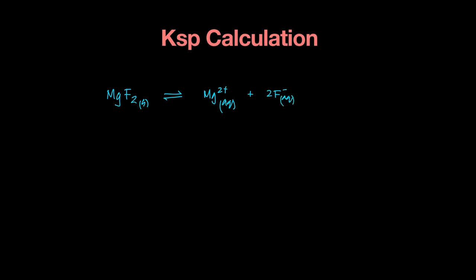The last thing we did was write the KSP expression for this. The KSP expression is just the right-hand side, not the solid on the left-hand side. So it comes out as [F⁻] whole thing squared, and that would be the KSP for this.